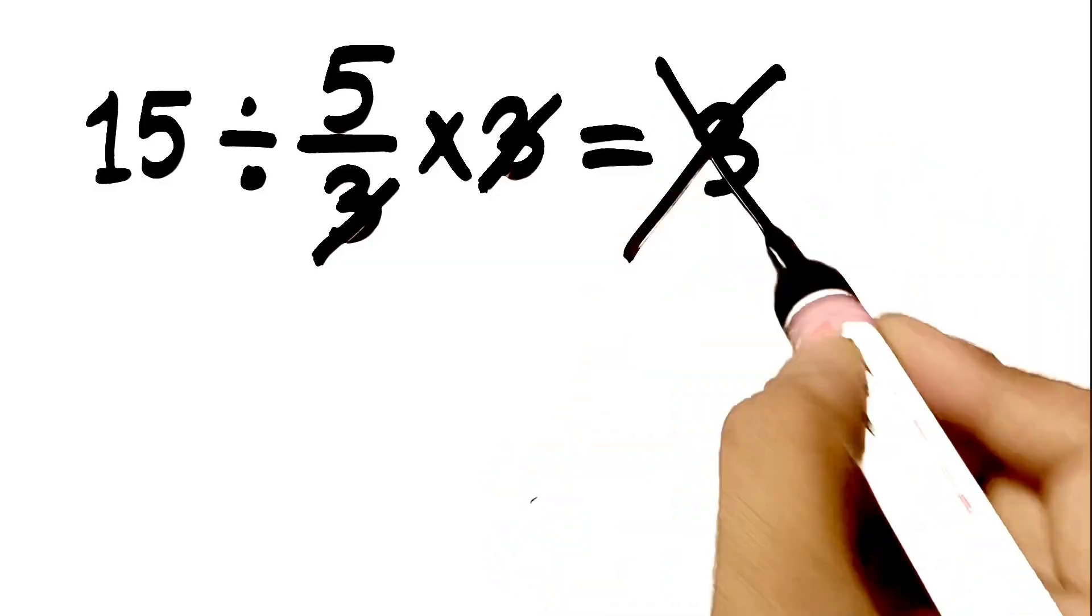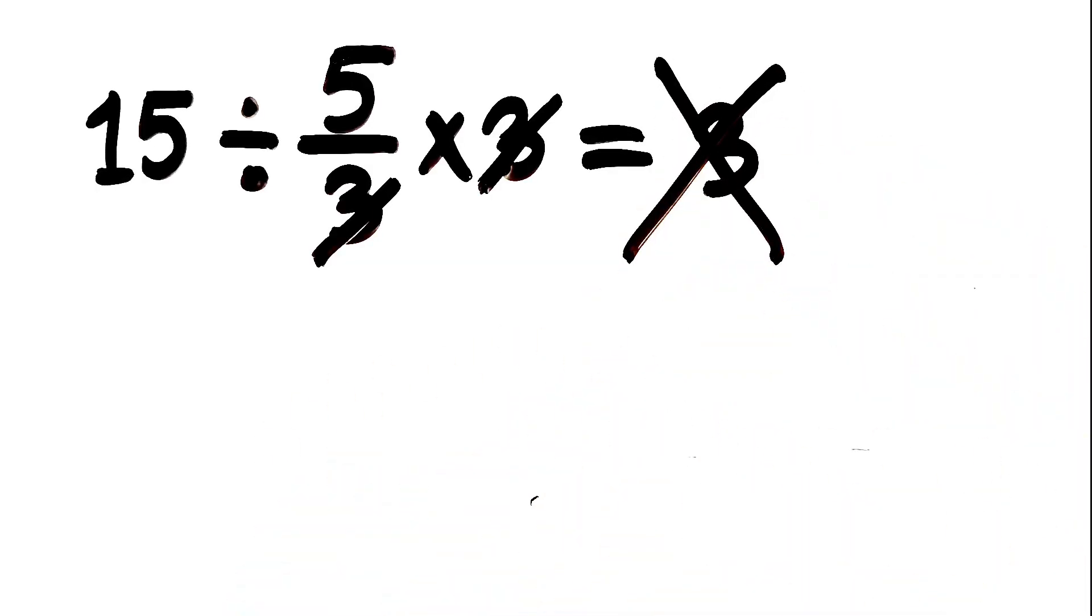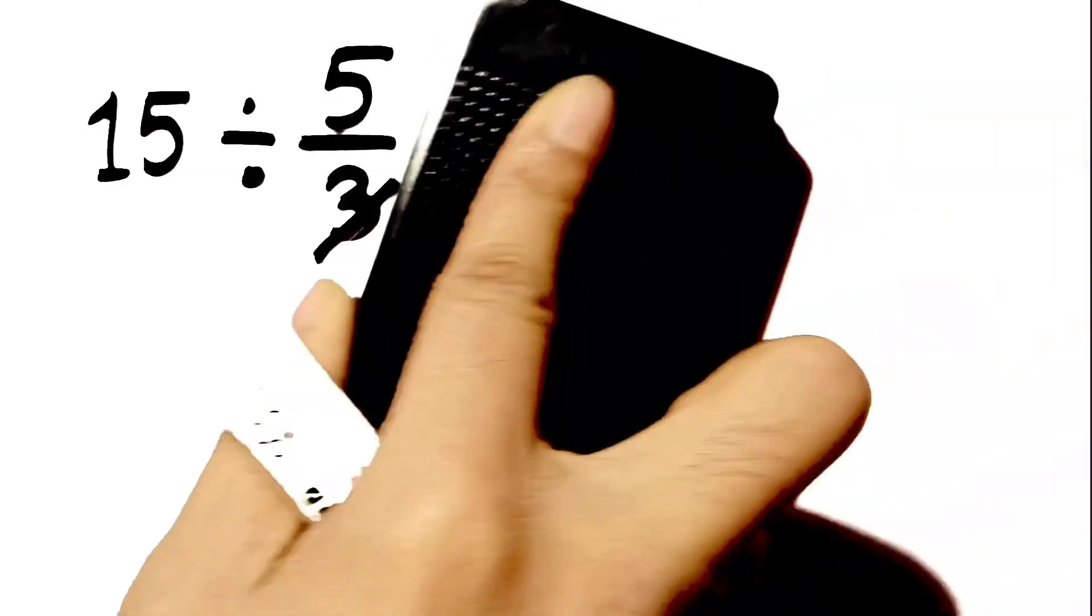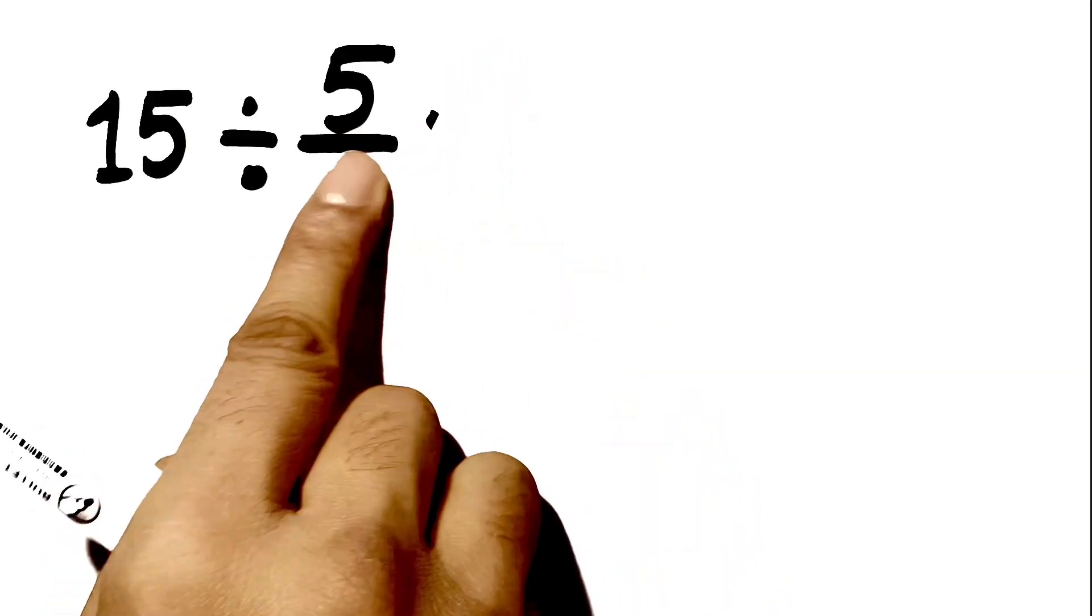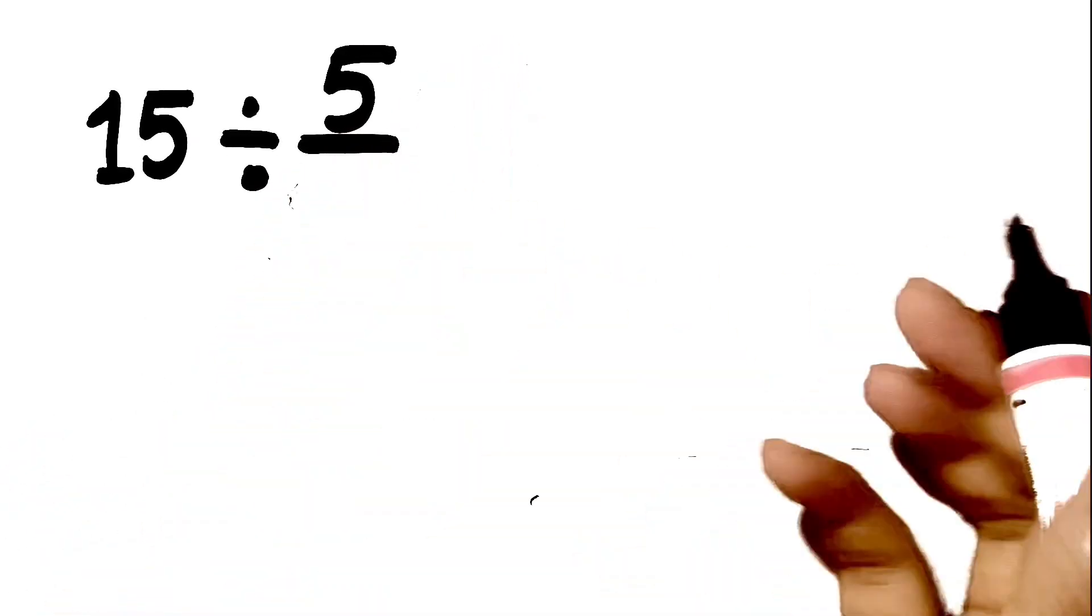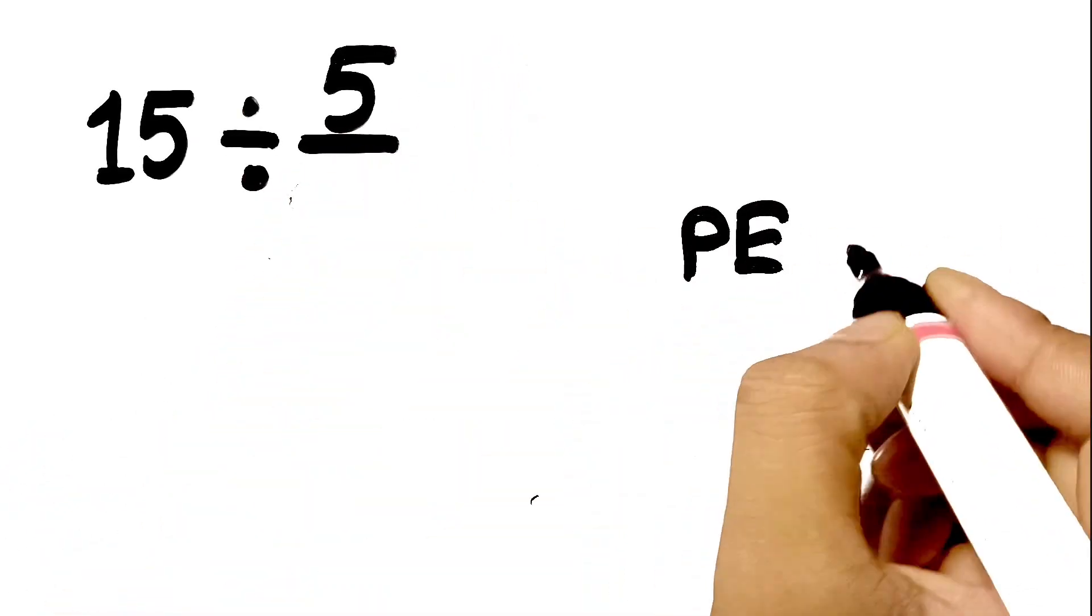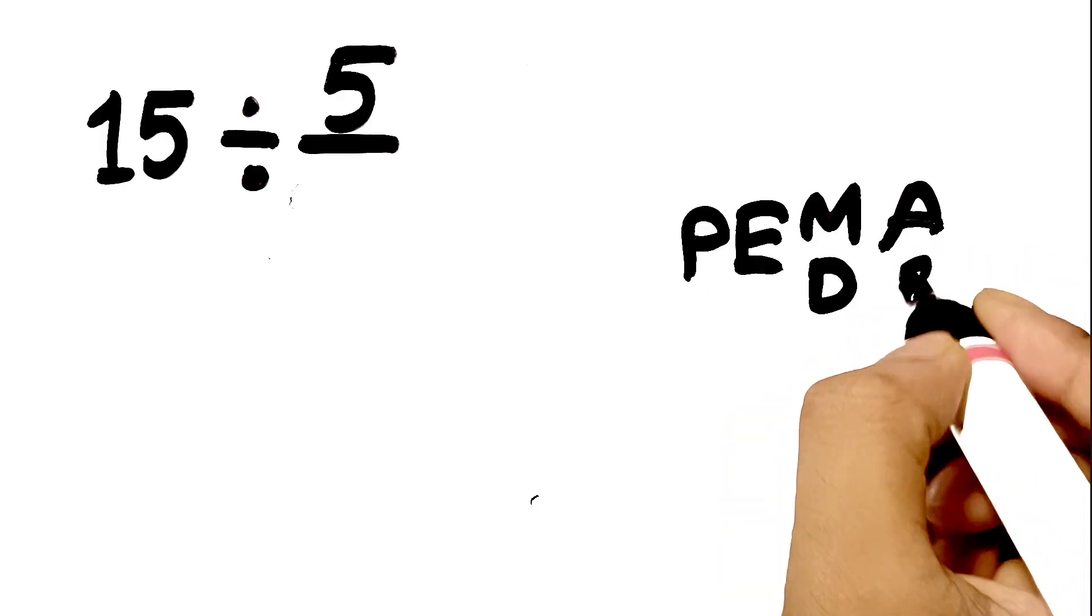But this answer is not correct, because according to the order of operations, first we have to do parenthesis, then exponents, then multiplication or division, and finally addition or subtraction.